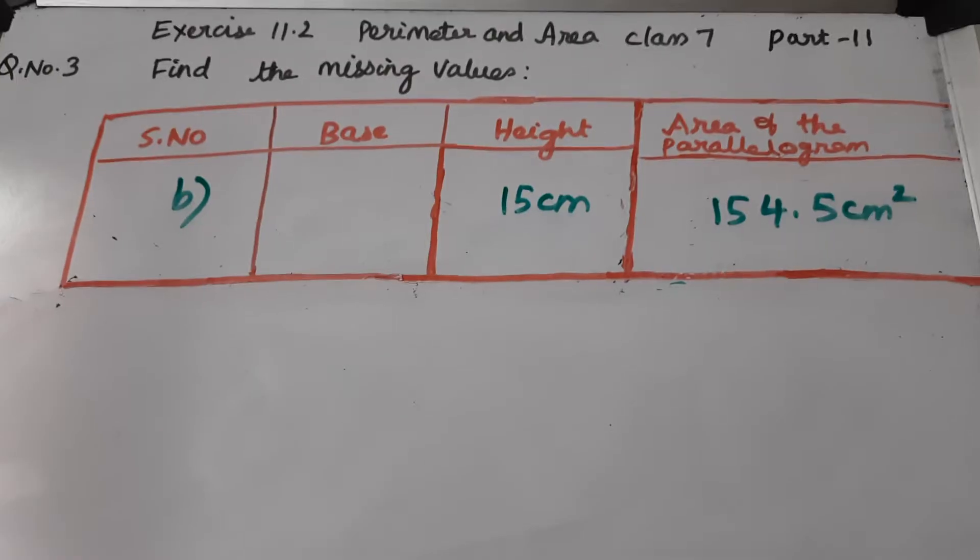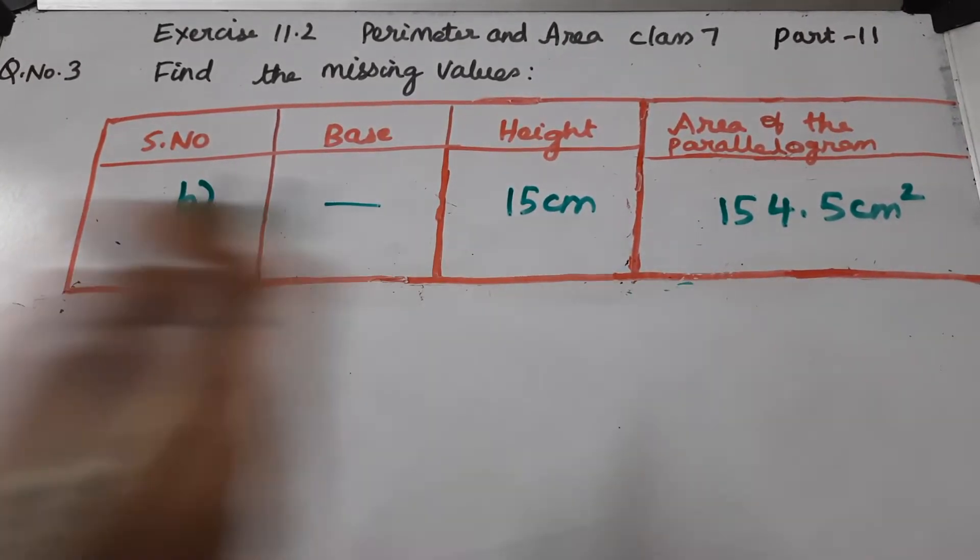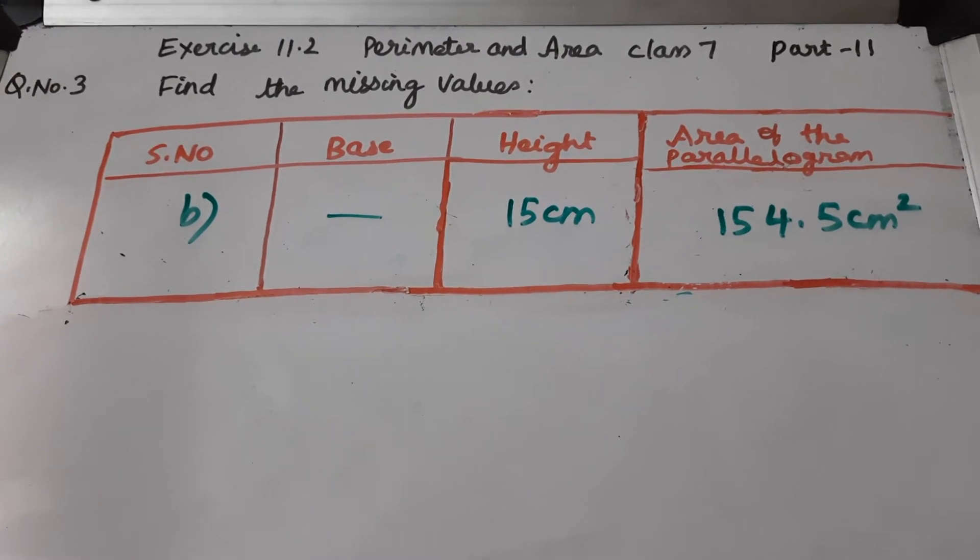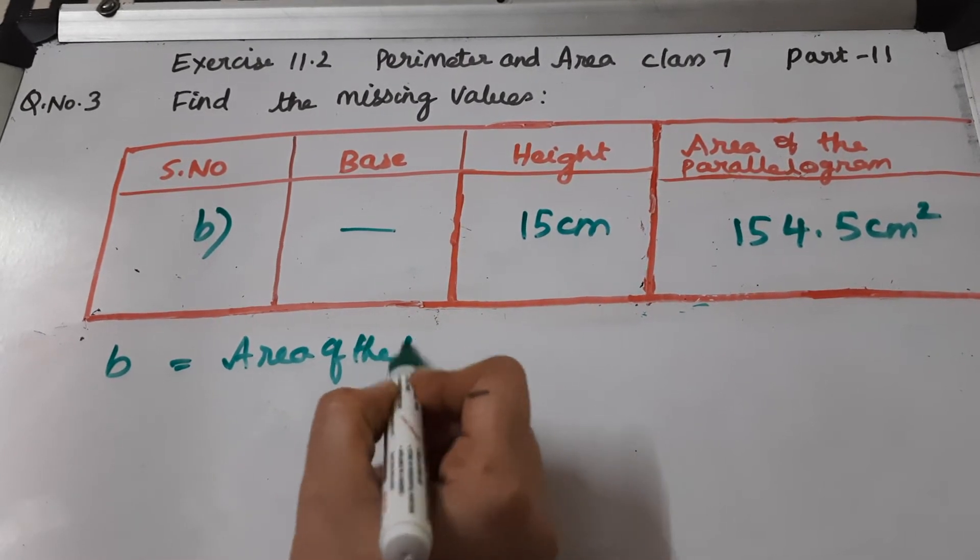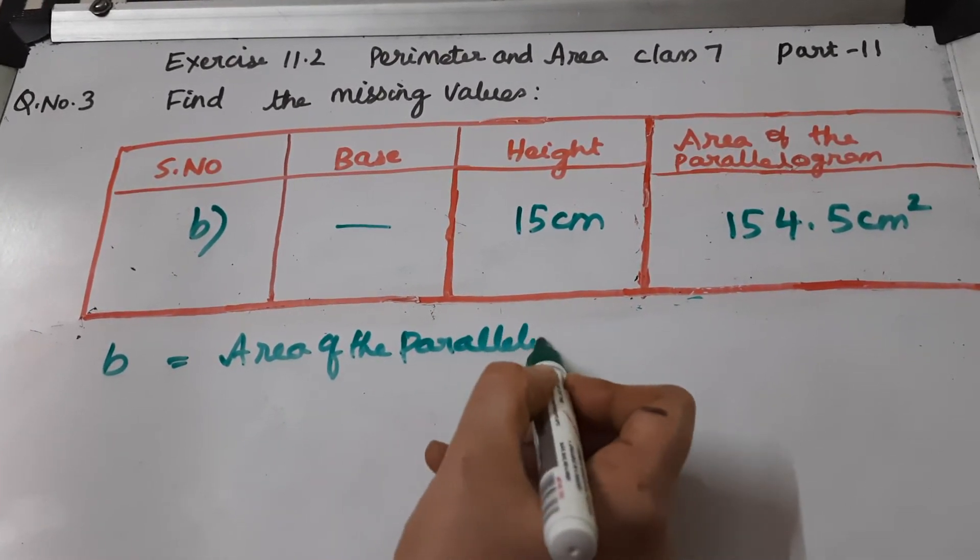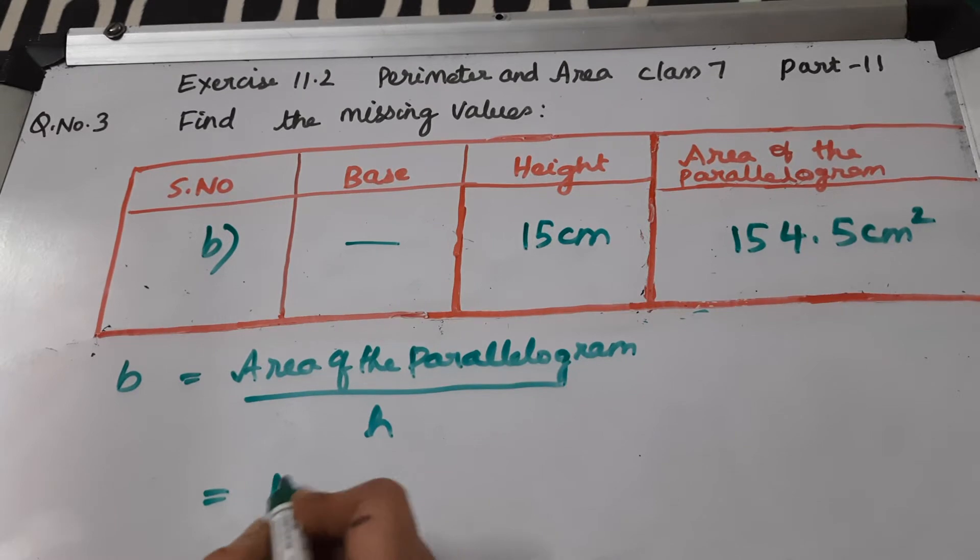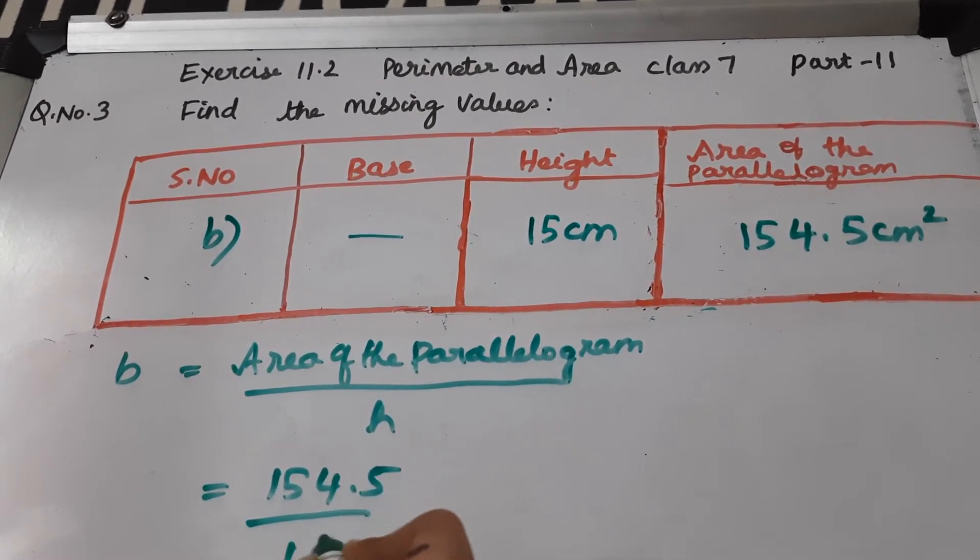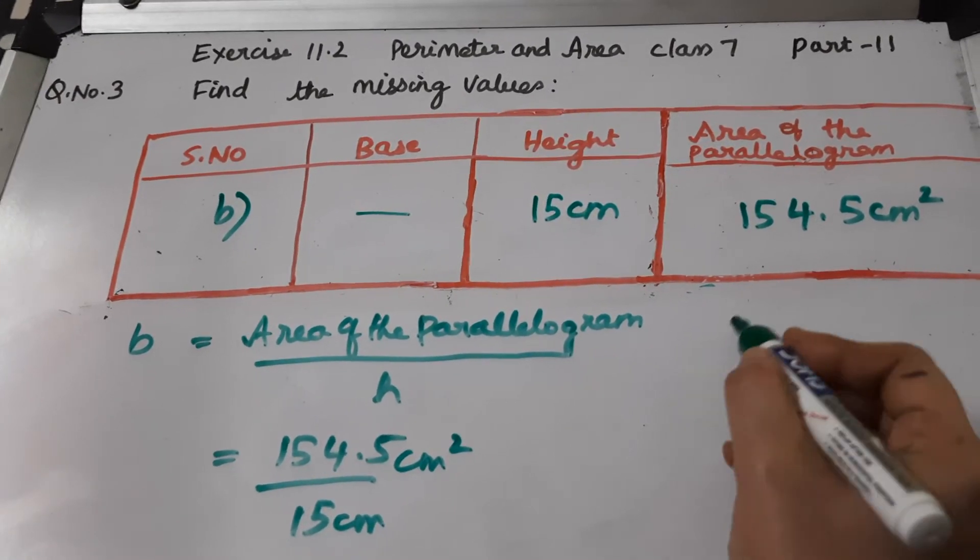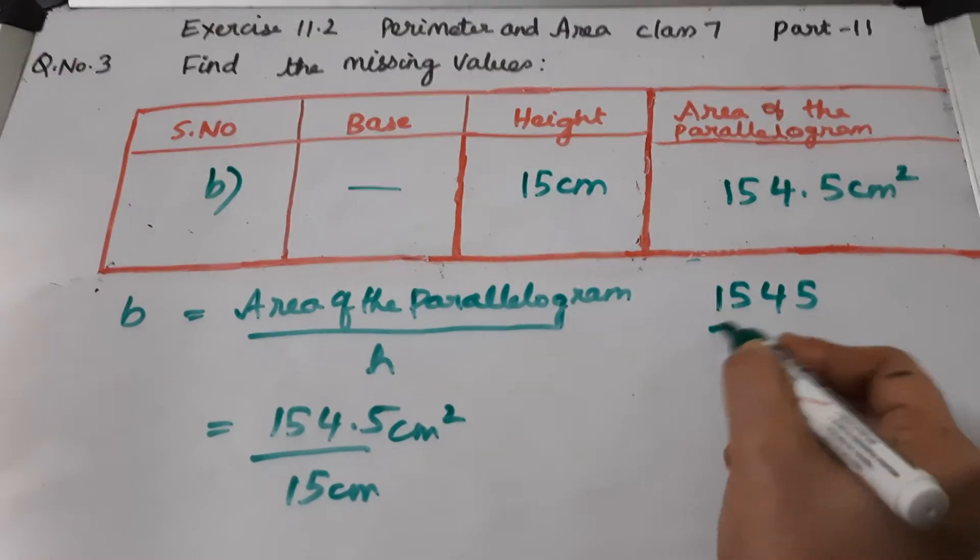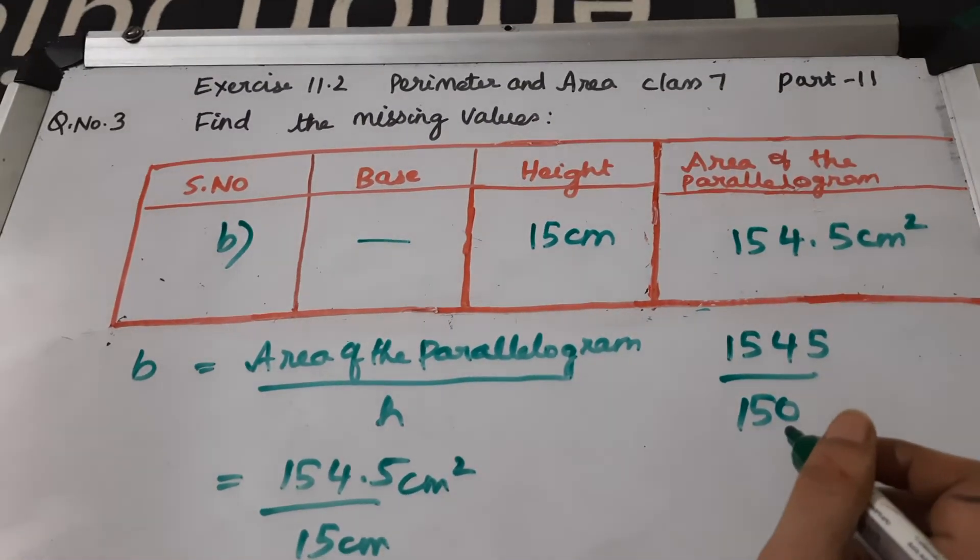Let's go to the second bit. Now, in the second bit height is given. Base is not given. Area of the parallelogram is given. So base equals area of the parallelogram by height. You will write like this. Now, here there is a point, so to remove the point add 0 here.